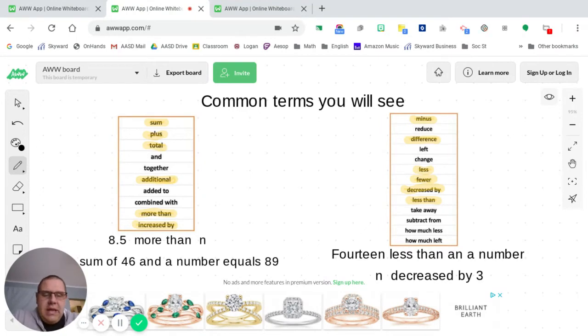14 less than a number. Okay. 14 less than a number. Pretty common term. Less than. Here's another example. N decreased by three. Decreased pretty much tells you that you're decreasing your value or your amount.